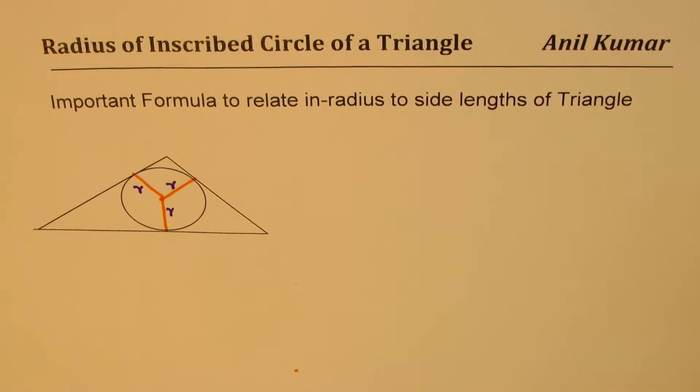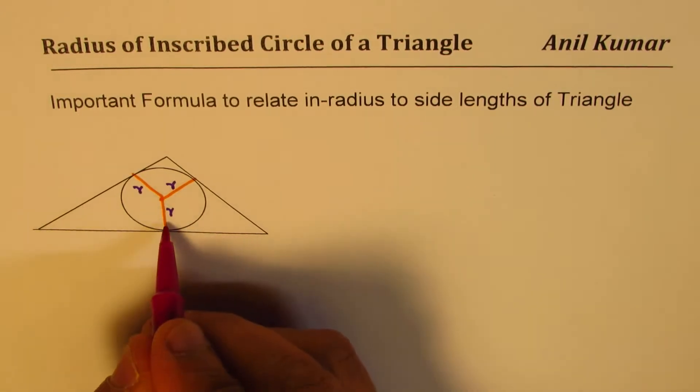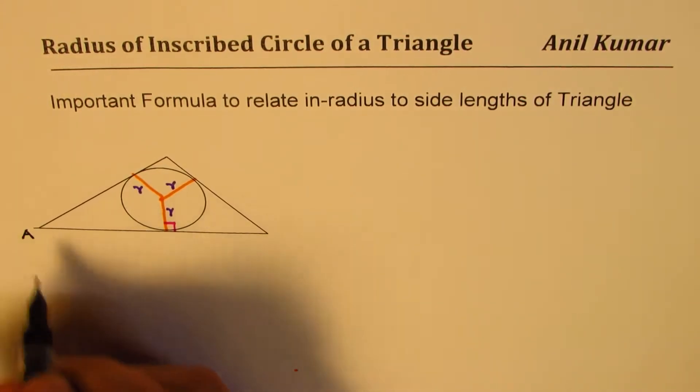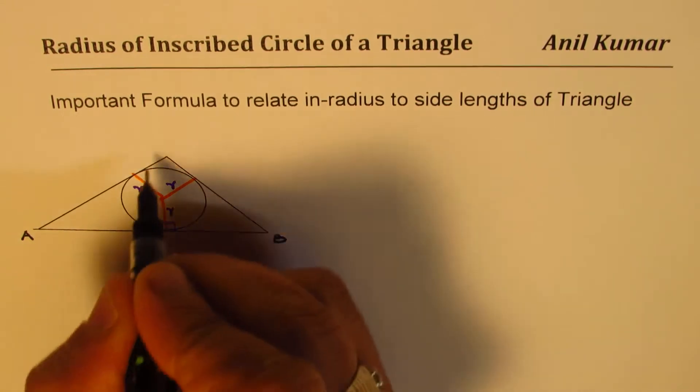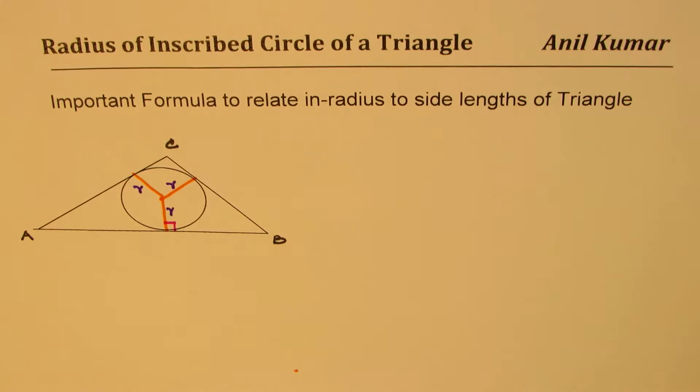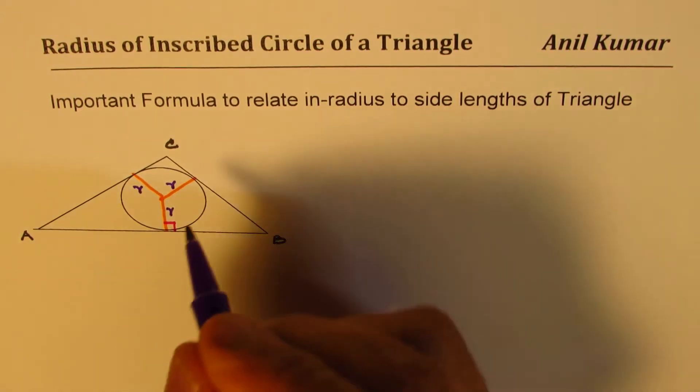So if we have a circle inscribed in a triangle, in that case, all the sides will be tangent to the radius. So we have a right triangle right there. Let us say that the triangle is triangle ABC. Then the sides could be referred to as lowercase a, b, c.